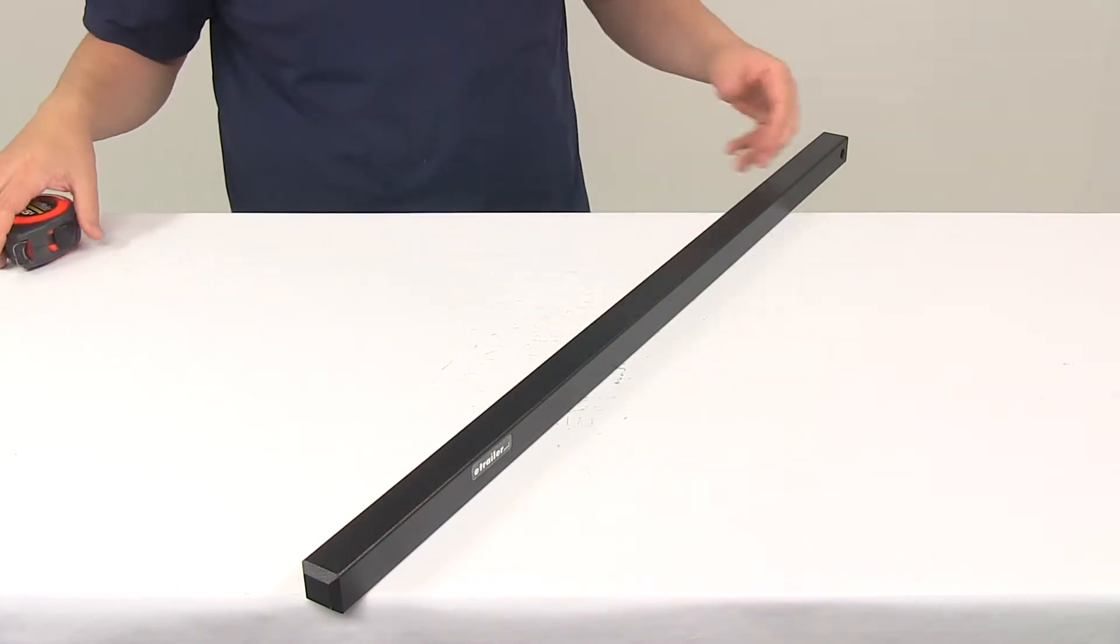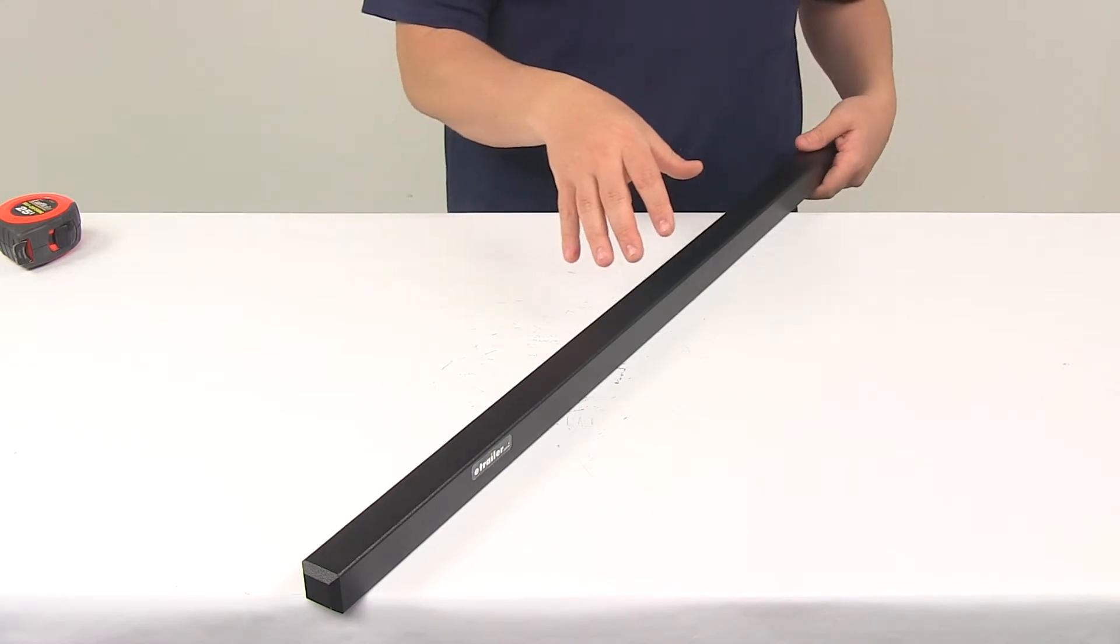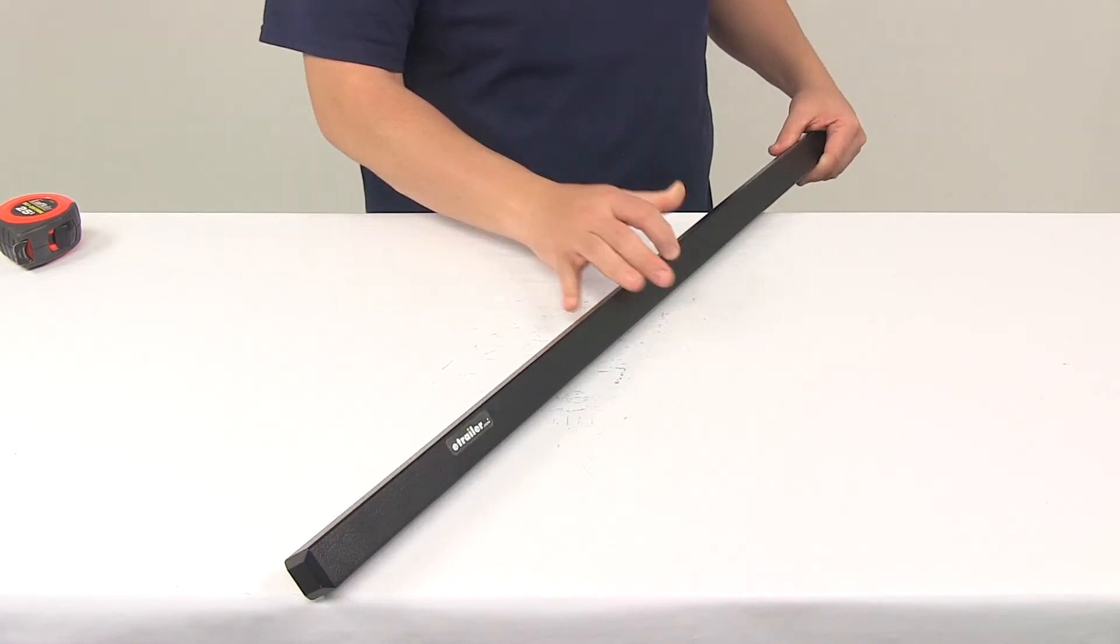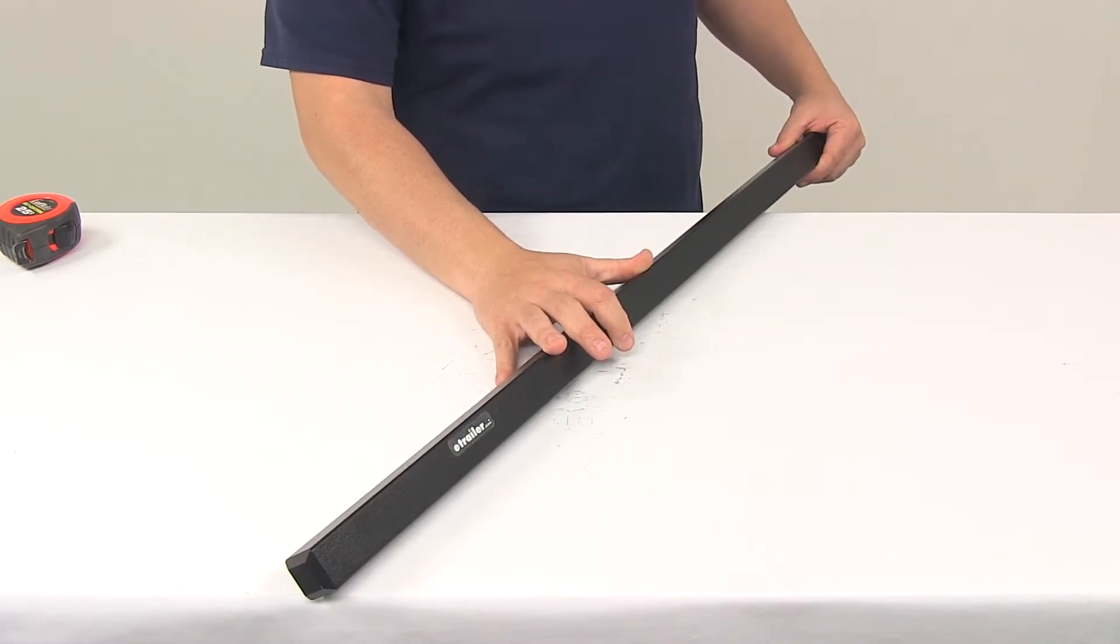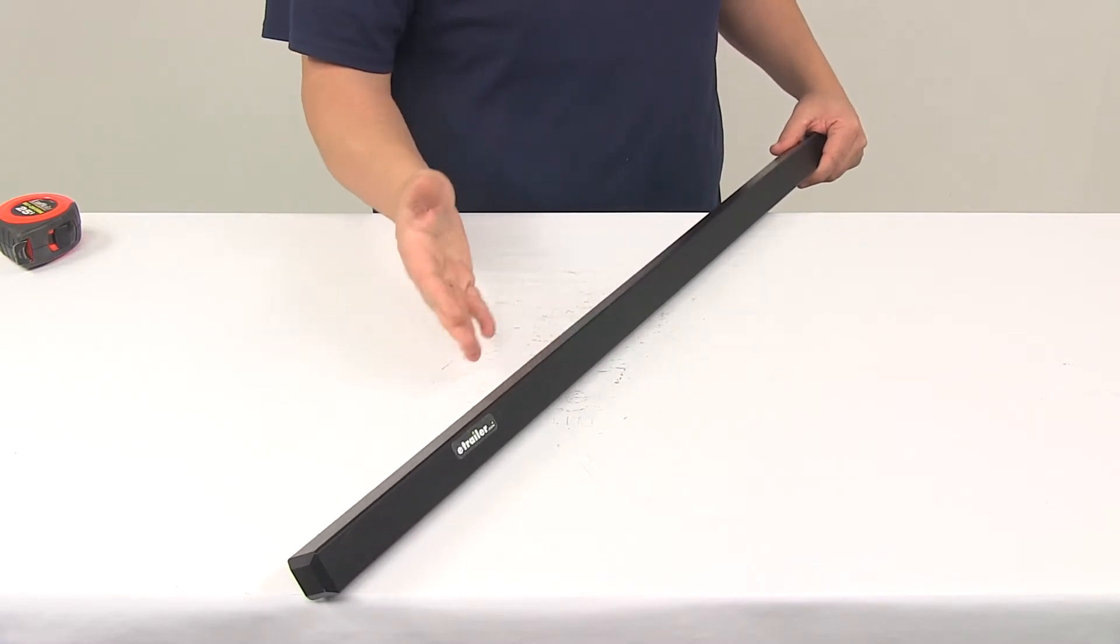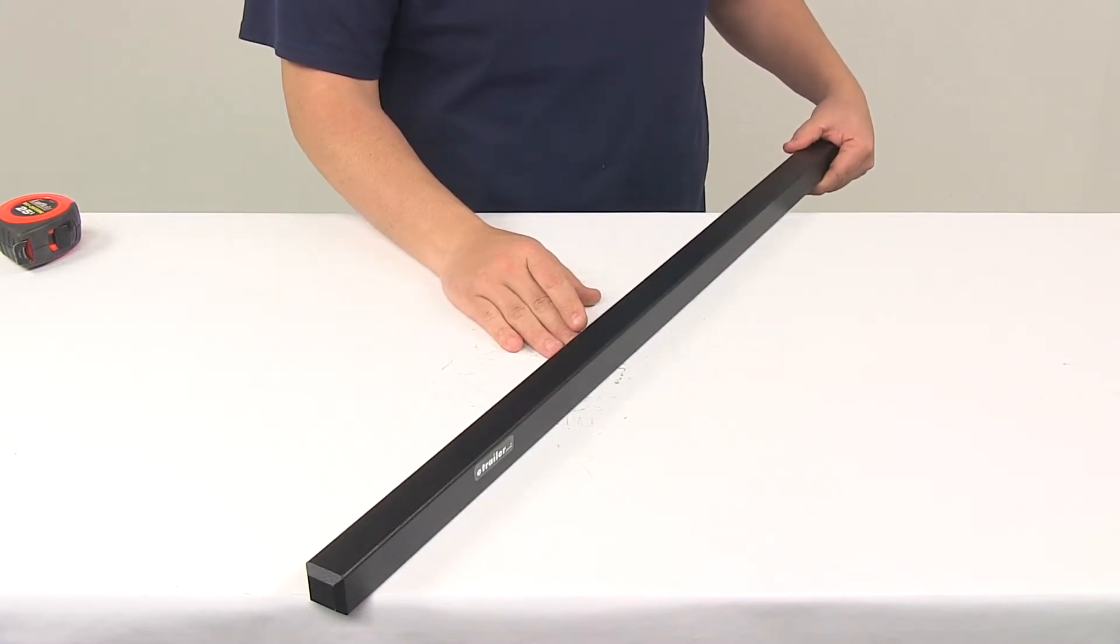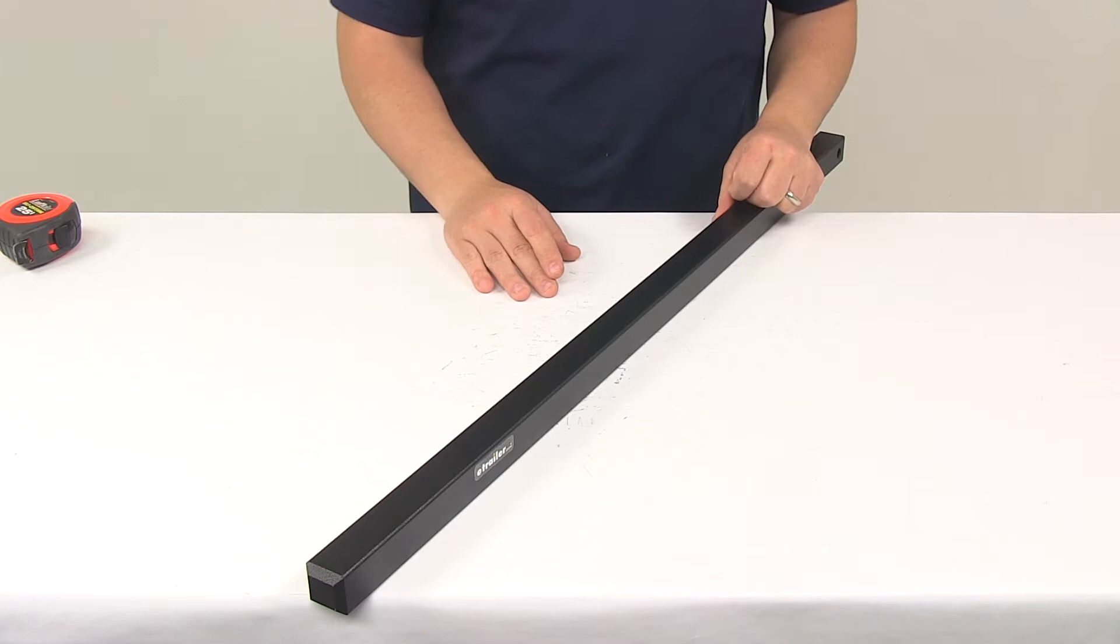Now if you have an older model Curt TrueTrack system that came standard with 32 inch spring bars, this 35 inch long bar will work but you must replace both spring bars to ensure that the same length bars are installed on the system.